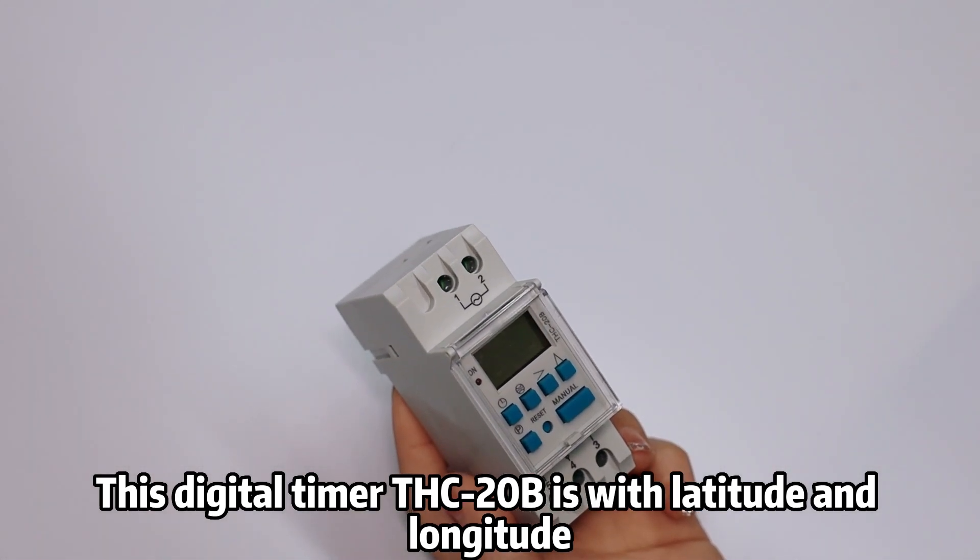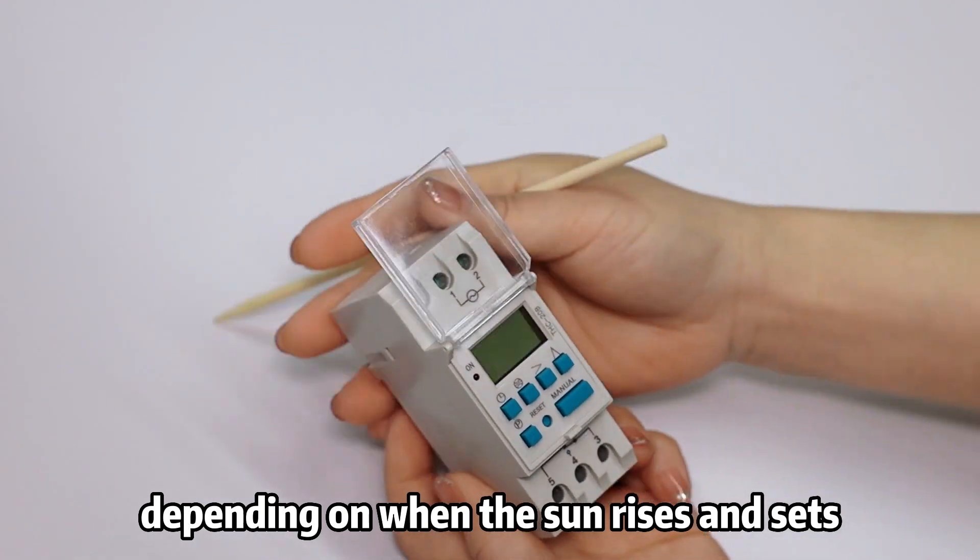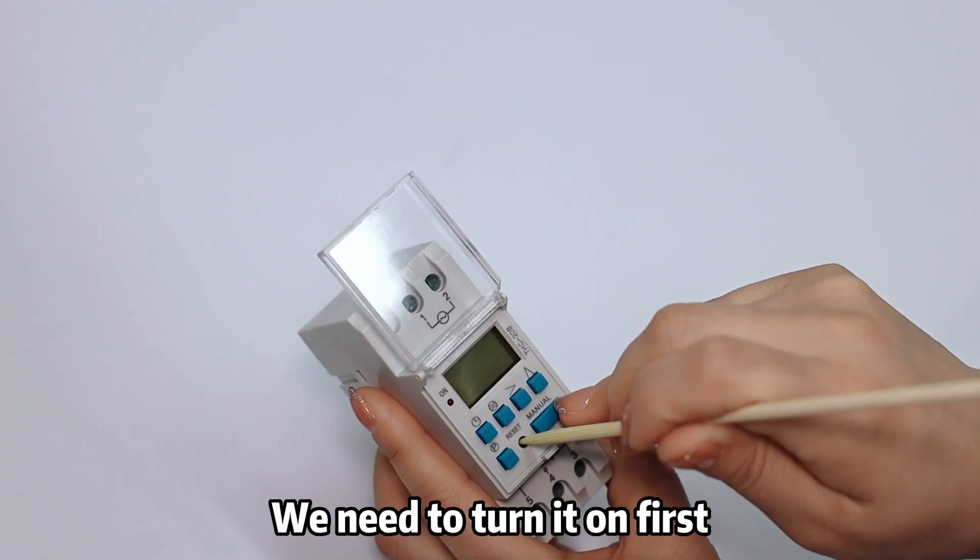This digital timer THC-20B has latitude and longitude features and adjusts its own time in winter and summer. Depending on when the sun rises and sets, the product is powered off at the beginning. We need to turn it on first.